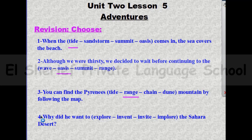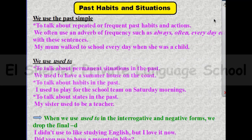Number four: why did he want to — explore, invent, invite, or implore — the Sahara Desert? The answer will be: why did he want to explore the Sahara Desert? Now let's turn to the grammar for this lesson.